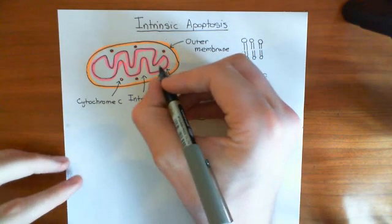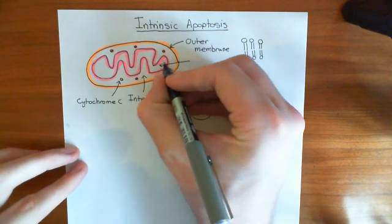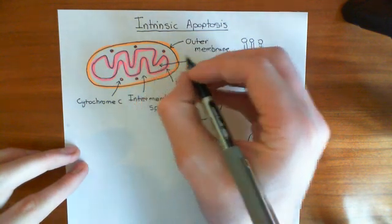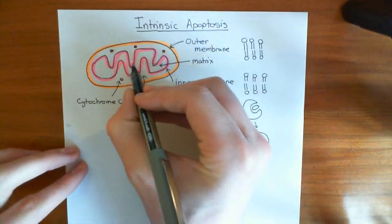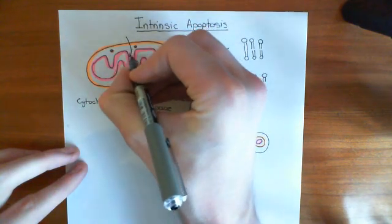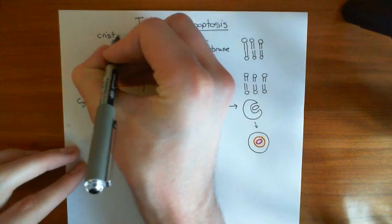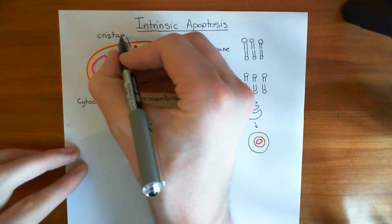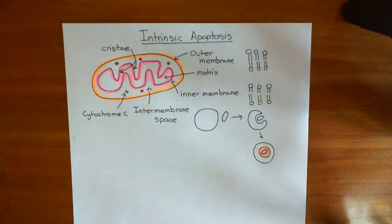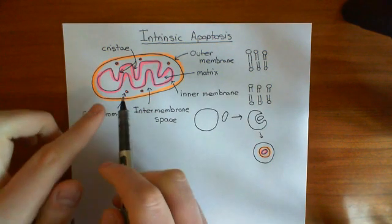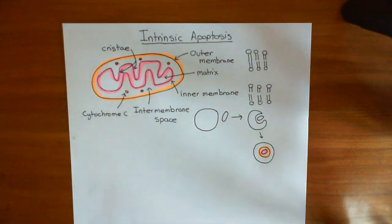To finish our anatomy of the mitochondria: the volume inside the inner mitochondrial membrane is known as the mitochondrial matrix. And these invaginations of the inner membrane into the matrix are known as cristae — cristae is the plural, crista is the singular. So that's a revision of mitochondrial anatomy, and the key signal in intrinsic apoptosis is the release of cytochrome C from the intermembrane space into the cytoplasm, which triggers apoptosis of that cell.